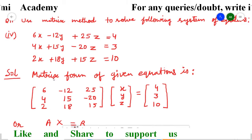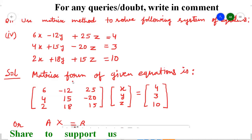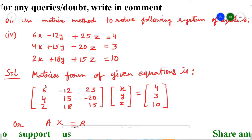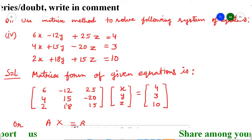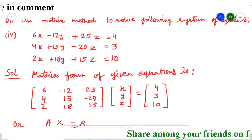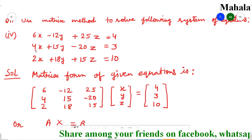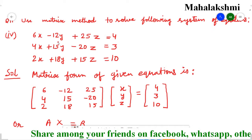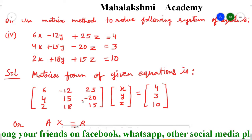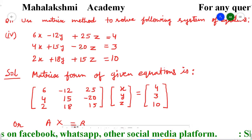First, the matrix form of the given equation is — we have to write down the matrix form. The first column is for the x variable, second column is for the coefficients of the y variable, and the third column is for the coefficients of the z variable. The coefficients of x are 6, 4, and 2. The y coefficients are minus 12, 15, and 18, and the z column coefficients are 25, 20, and 15.